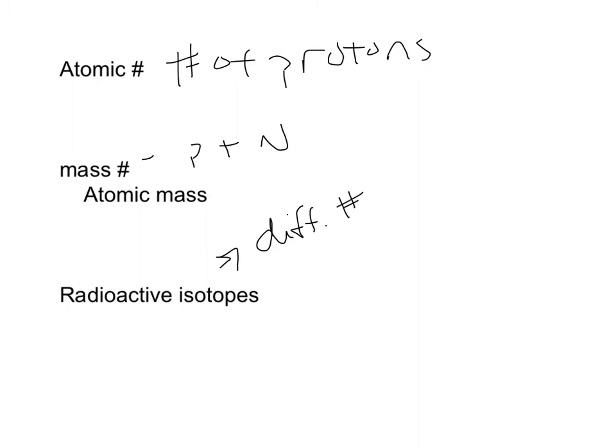For example, an element may have three protons and three neutrons, while its isotope would have four neutrons — so we've got a different number of neutrons in isotopes.